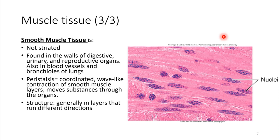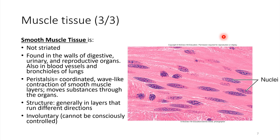Smooth muscle tissue is involuntary — we don't have conscious control over it. It's usually activated in coordination with the nervous system. We'll return to this later in the course when we learn about these different organ systems in more detail.